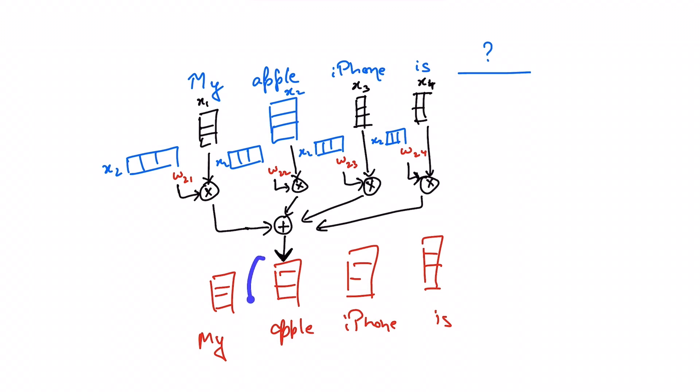Now here I show the update for the word apple but you can imagine the representations for each of these words getting updated in parallel using the same method.